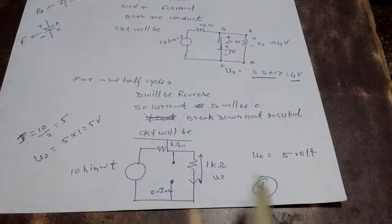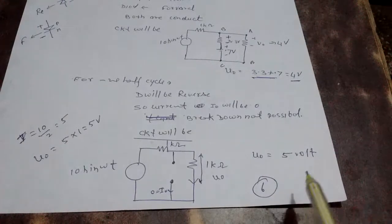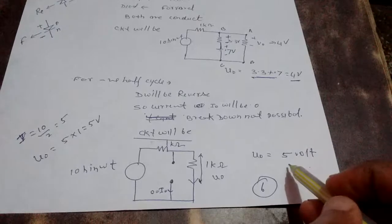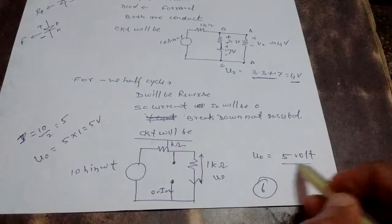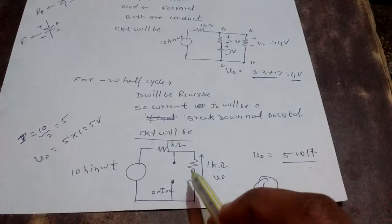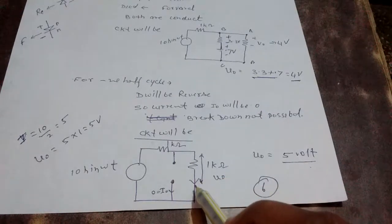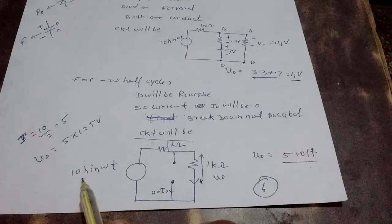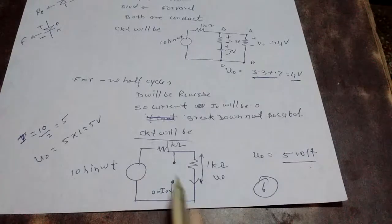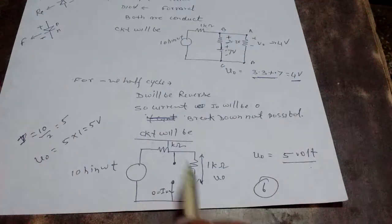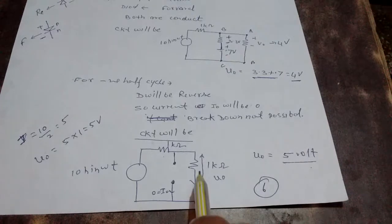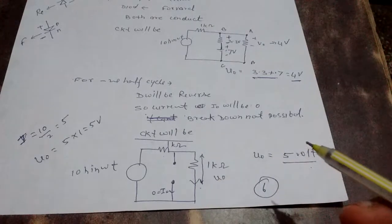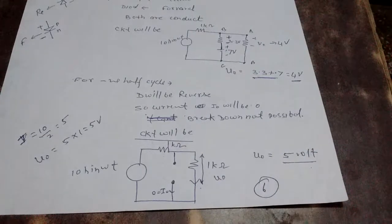So in the positive half cycle the voltage drop V₀ is 4V, and in the negative half cycle V₀ is 5V. Since both resistors are in series with equal magnitude, the 10V is divided equally — 5V drops across each 1kΩ resistor. No need to apply KVL; simple Ohm's law gives the answer.